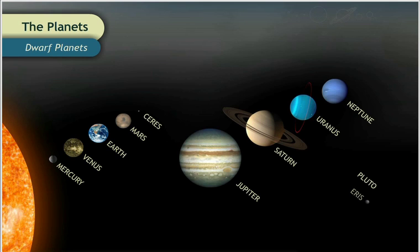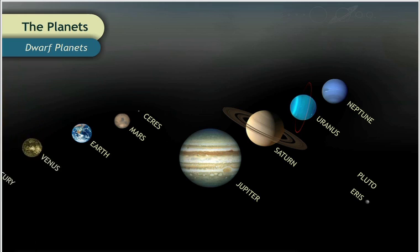In addition to the planets in our solar system, there are other objects called dwarf planets that don't fit the characteristics of planets.